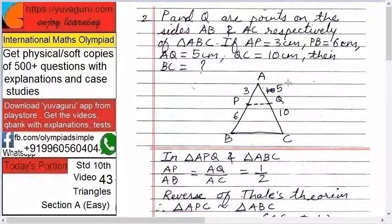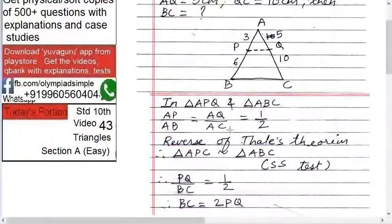In triangle APQ and triangle ABC, 3 upon 6 equals to 5 upon 10, means AP upon AB equals to AQ upon AC equals to 1 upon 2, because both are 3 upon 6 and 5 upon 10.